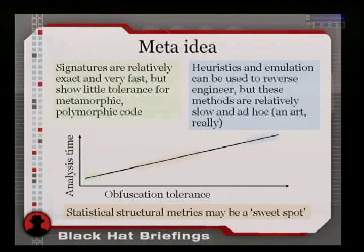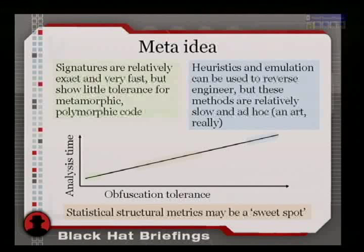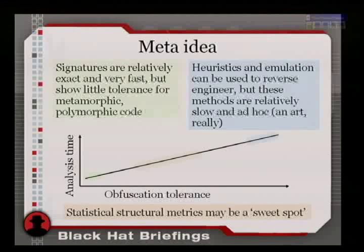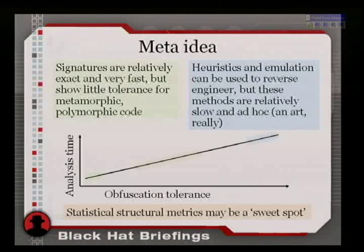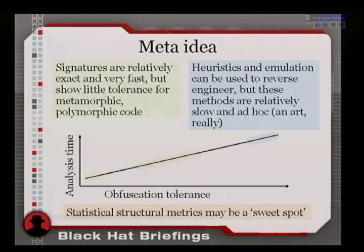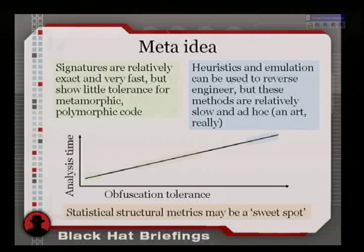The idea behind the three approaches that I'm going to show you today is very handily represented on the state-of-the-art graph. On the lower left-hand side, you see signature-based approaches. They are quite fast, quite exact, but relatively sensitive to permutations and all sorts of obfuscation techniques.